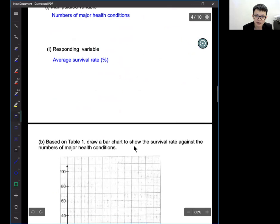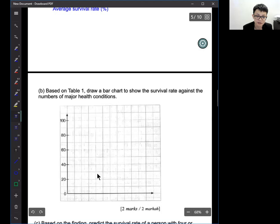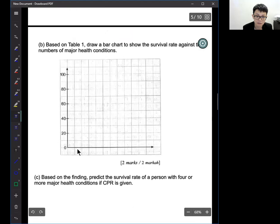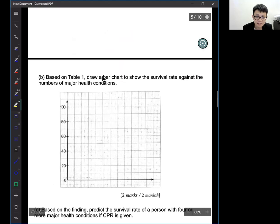Based on table 1, draw a bar chart to show the survival rate against the number of health. We can see from this question, draw a bar chart to show survival rate against the number of health. Usually, for a graph, on this part, it will be the manipulated. You just remember, this part is manipulated. The X axis, always the manipulated, the Y axis, will be always the responding.